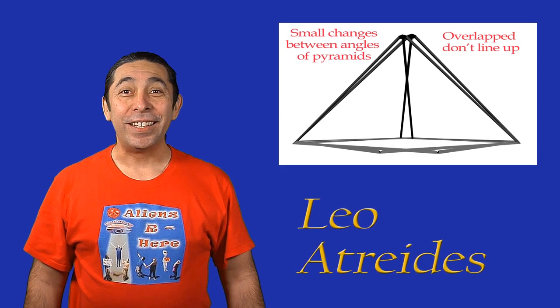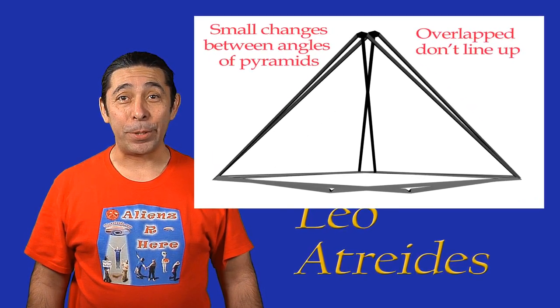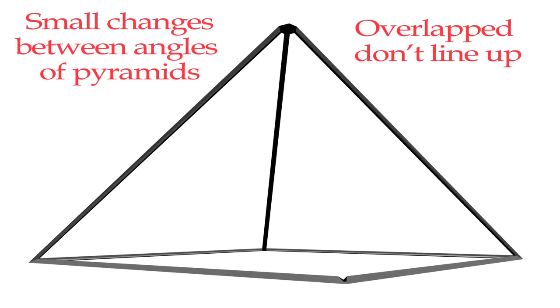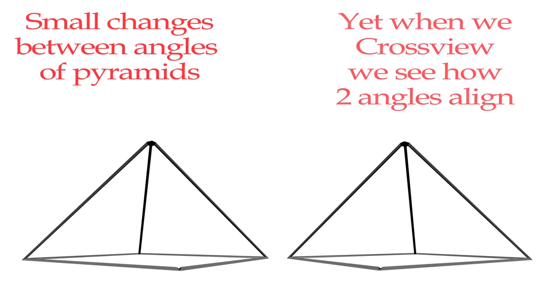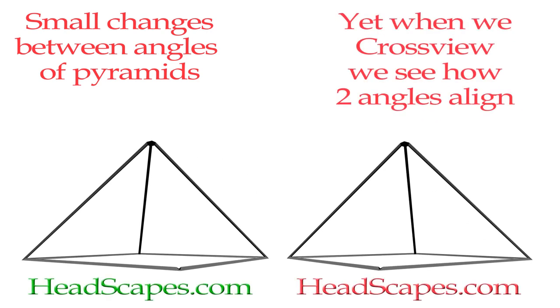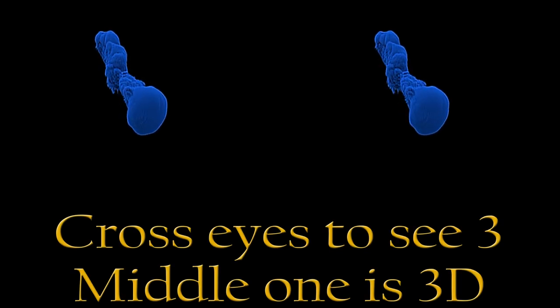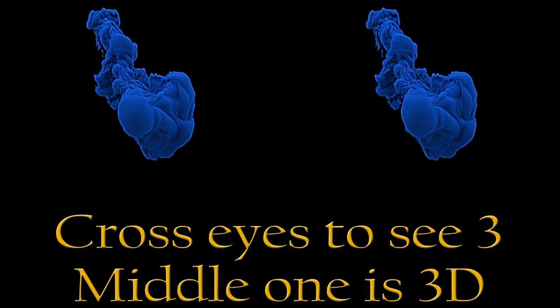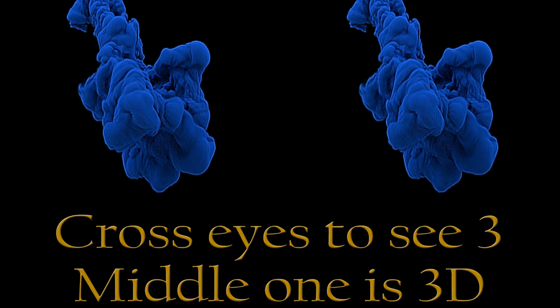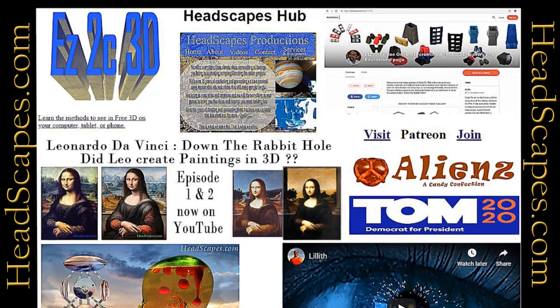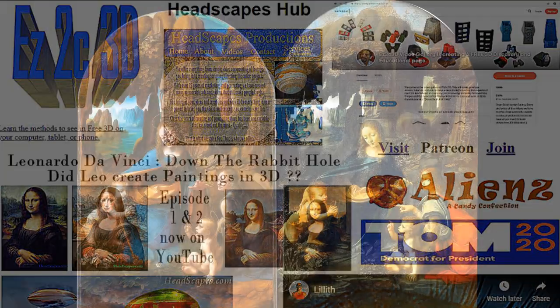Welcome to the third video in the Leonardo da Vinci 'Down the Rabbit Hole' series, where we look at more paintings by Leonardo and other artists for 3D clues. By the end of this series I intend to present enough evidence to show that not only da Vinci but many other artists were attempting to break the 2D barrier and bring another dimension to their paintings. Most of you are already familiar with the free 3D, also called cross-view, where a person can see two pictures merge into a 3D picture without needing glasses or a viewer. If not, I recommend visiting my easy-to-see 3D page at headscapes.com to learn the process.